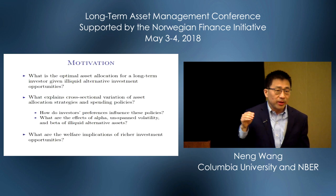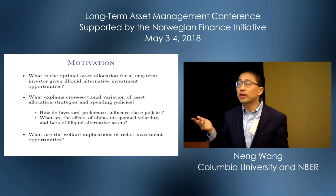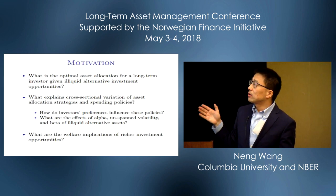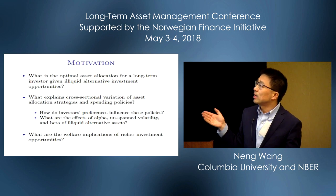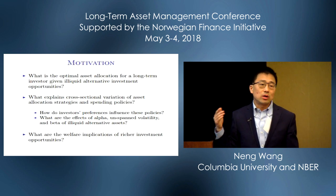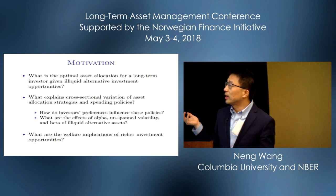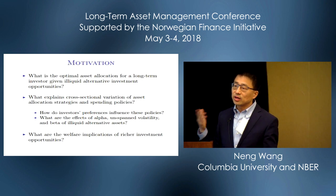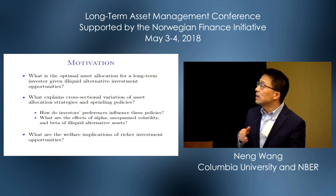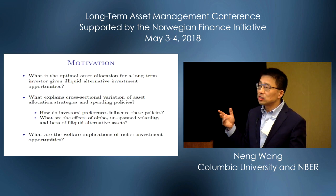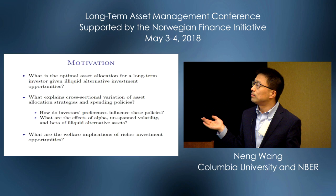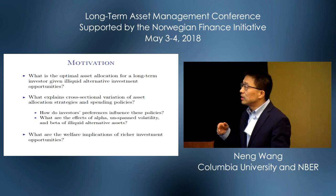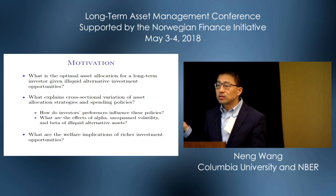So what do we want to do in this paper? Very straightforward. We ask the following questions: What is the optimal asset allocation for a long-term investor — think about university endowments — given illiquid alternative investment opportunities? And how do we explain the cross-sectional variations? I want you to think about this from a conceptual perspective in terms of the asset allocation and spending strategies — why do they differ so much? Obviously that depends on investors' preferences and their investment opportunities.